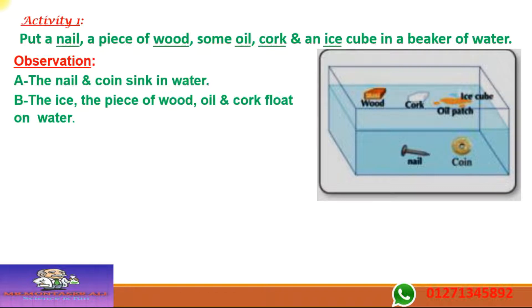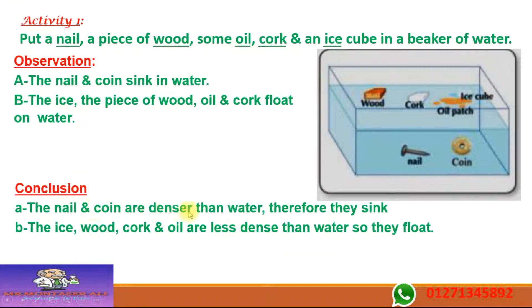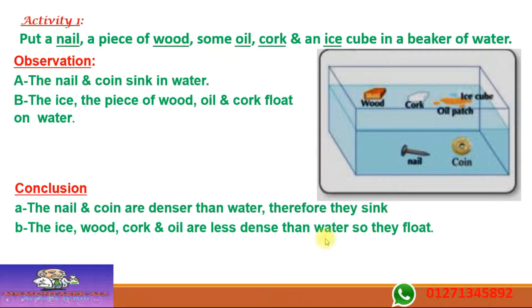The nail and coin are denser than water — they have more density than water. The density of water is 1. So the nail and coin have density more than 1 — water cannot hold them, so they sink. Ice, wood, cork, and oil are less dense than water — density less than 1 — so water can hold them and they float.